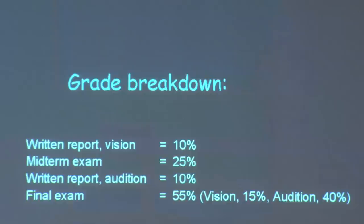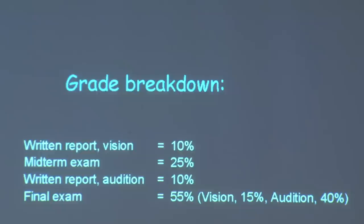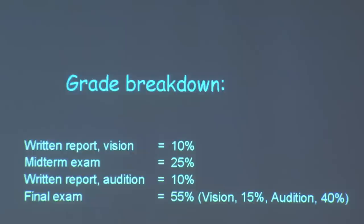Let me specify the grade breakdown. The written report for each half of the course — one for vision and one for audition — will constitute 10% of the grade each. The midterm exam constitutes 25%. The final exam constitutes 55% of the overall grade, with 15% on vision and 40% on audition. If you add that up, you can see that vision and audition are equally weighted for the exams.